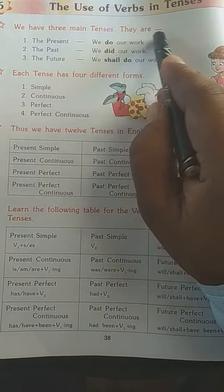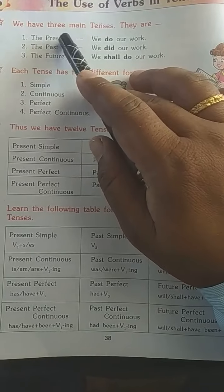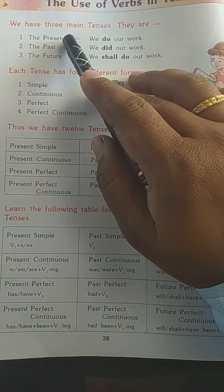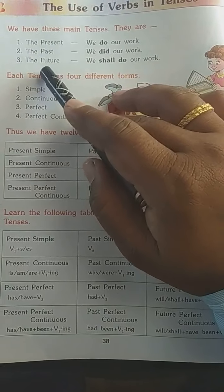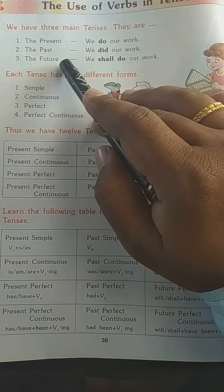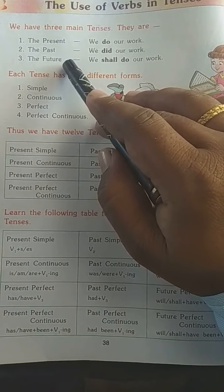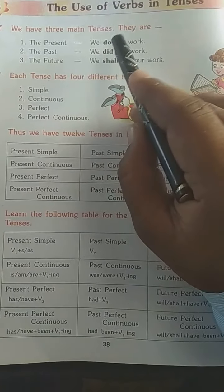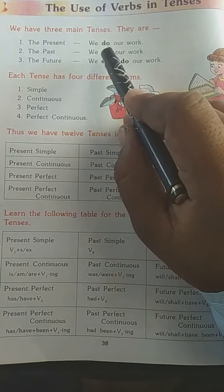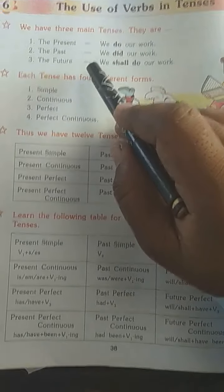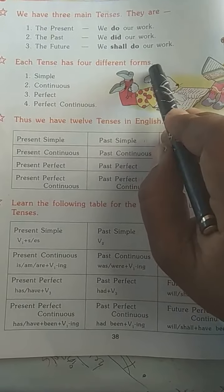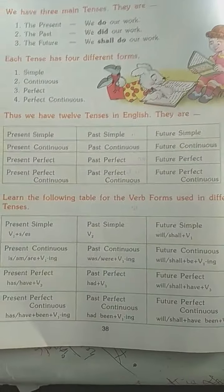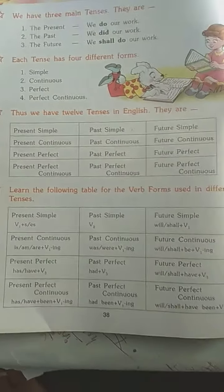We have 3 main tenses. They are the present tense, the past tense, and the future tense. Aapne paas 3 main tense hai: present tense hai ni vartaman kaal, past tense hai ni bhut kaal, and future tense hai ni bhavishit kaal.